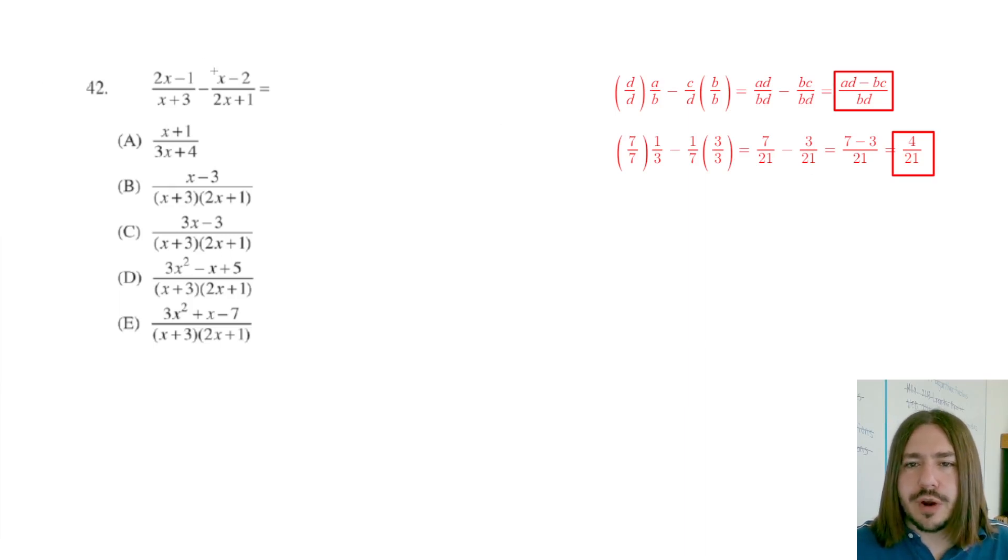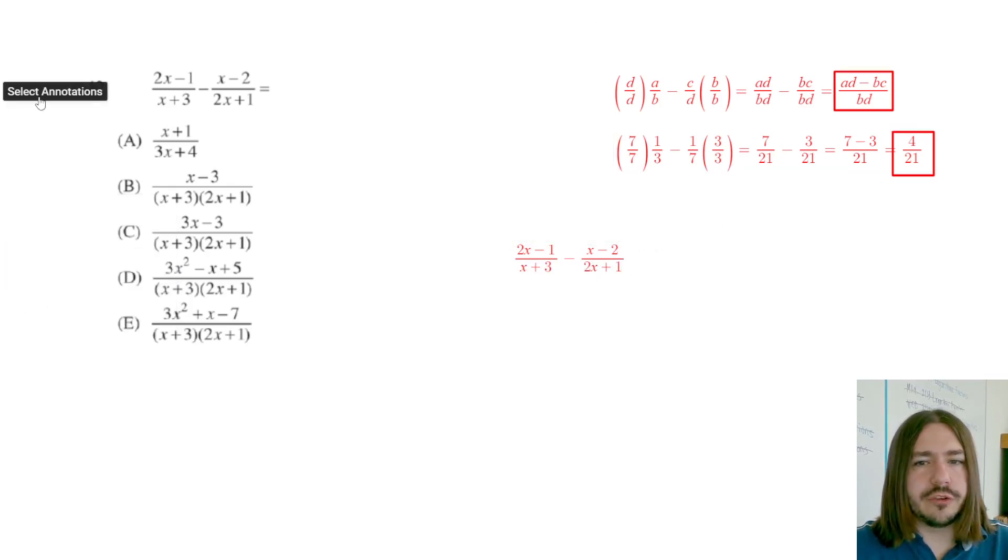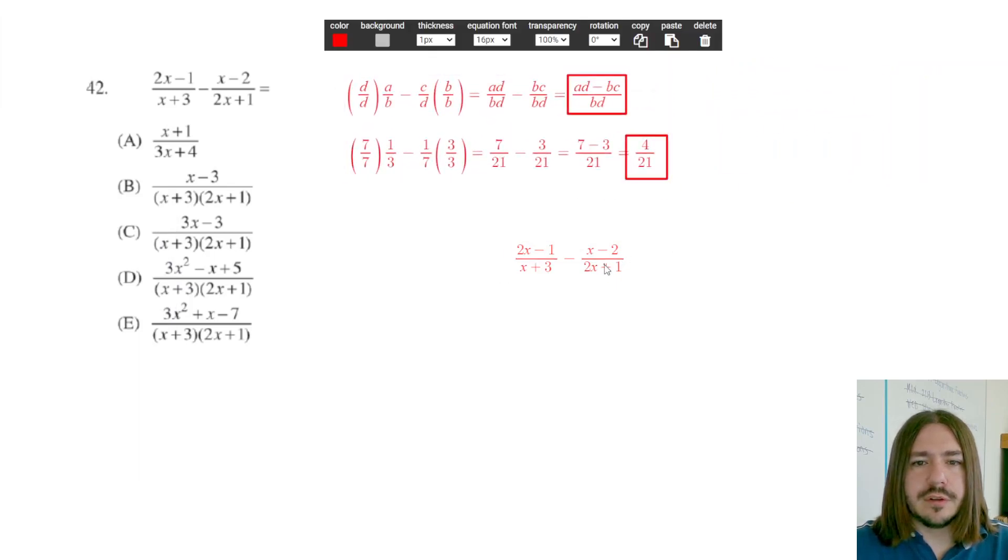So now let's go and look at our problem, because basically, we're just subtracting fractions again. So we're going to follow these rules of how you do that. So I'm going to go ahead and type in the original problem, two x minus one over x plus three, minus x minus two, over two x plus one. Let me drag all this over here. So you can kind of just see them all stacked on top of each other.